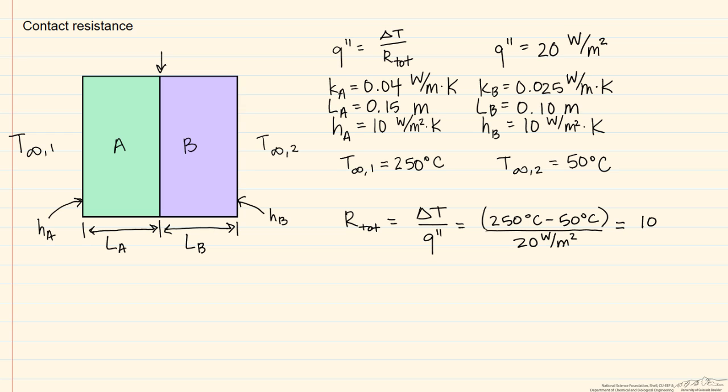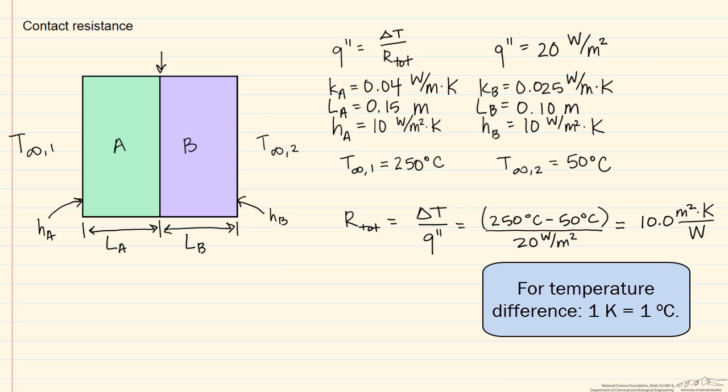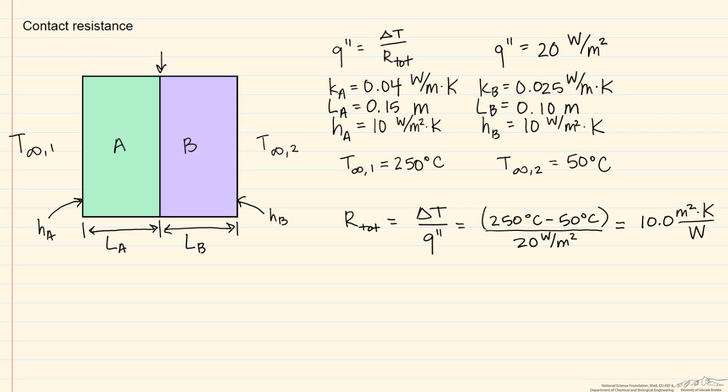And that's going to equal 10 meters squared kelvin, because remember when we're talking about a temperature difference, 1 kelvin is equal to 1 degrees Celsius, divided by watts. So that's our total resistance.